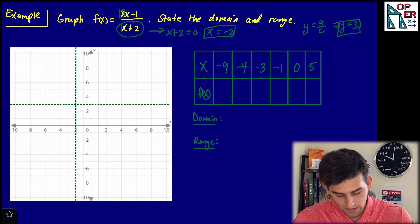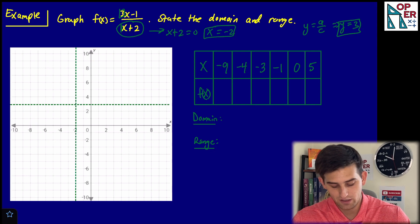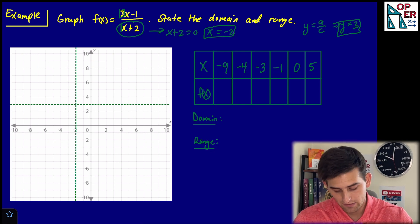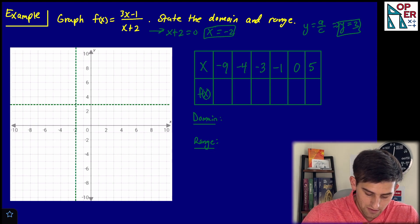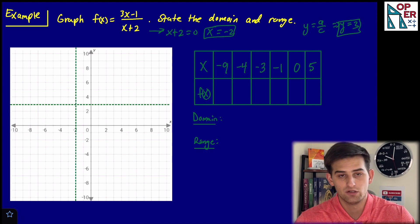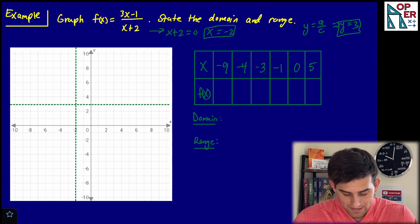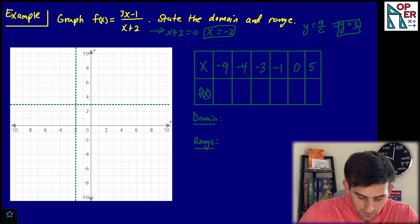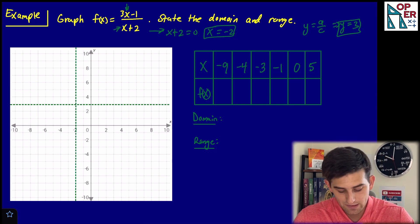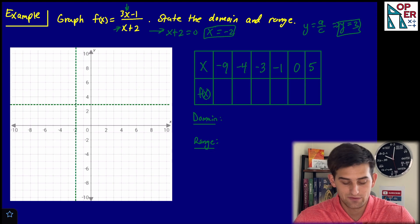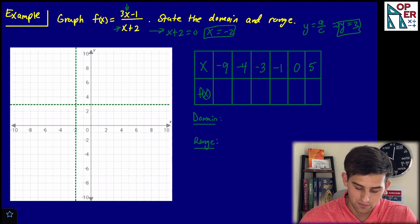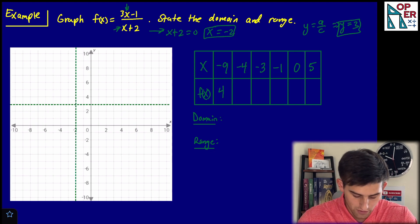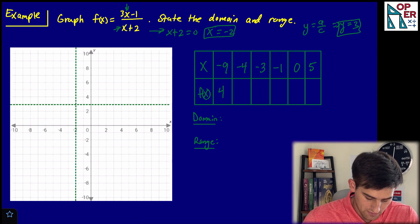Now we look at our table of values. I've already picked three x values to the left of the vertical asymptote and three to the right. We plug these six values into our rational function. For x equals negative nine: three times negative nine is negative 27, minus one is negative 28; negative nine plus two is negative seven; negative 28 over negative seven gives us positive four. So the point is negative nine, four.